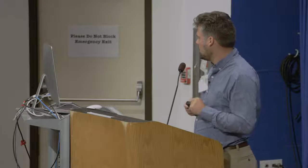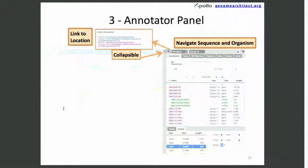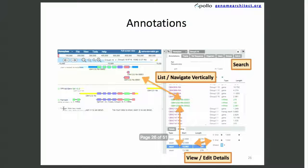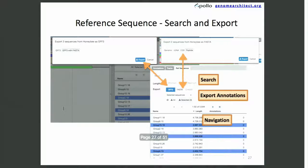The third piece of the Apollo interface is the annotator panel. It works just like a regular application panel. You could share locations with other researchers you're working with easily. It's collapsible, so you don't have to look at it the whole time if you don't need to. The first tab just allows you to list things vertically, so you can navigate independently of where you happen to be on the screen. You can search in a way similar to JBrowse, different reference sequences, as well as export as GFF3, FASTA, directly to CHADO if you have it configured, and variants.